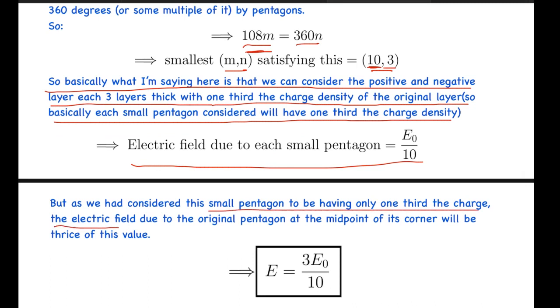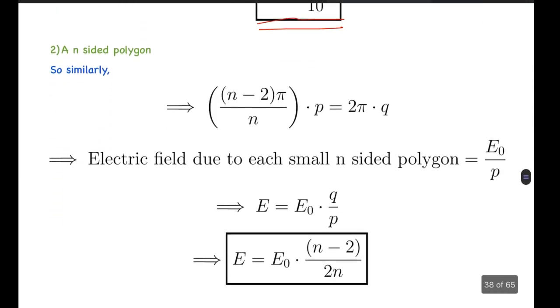charge density, the electric field due to the original pentagon at the midpoint of its corner will be thrice of this value. Because, as I said, there will be three layers, so each will be of σ/3, σ/3, and σ/3 charge density. So the electric field we get again from here is the same value of 3E₀/10. That's the answer for the second part. Now we can